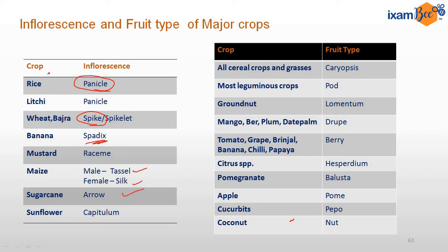Regarding fruit types: for all cereals and grasses the fruit is a caryopsis. For groundnut it is a lomentum. For tomato, grape, brinjal, chili, and papaya it is a berry. For citrus it is a hesperidium. For pomegranate it is a balusta. For cucurbits the fruit is called a pepo.